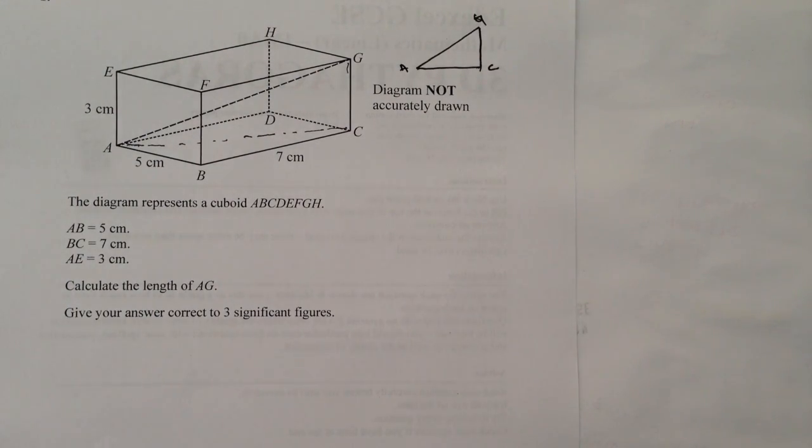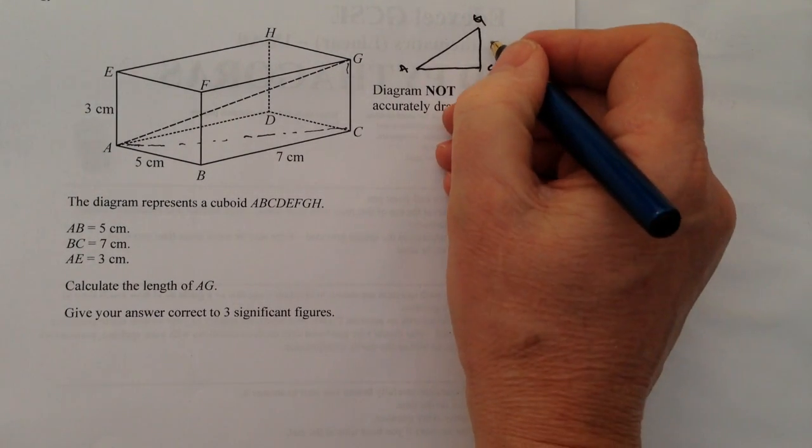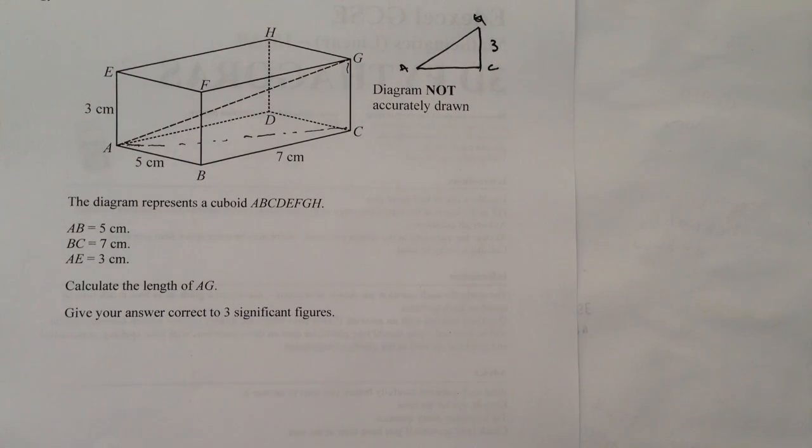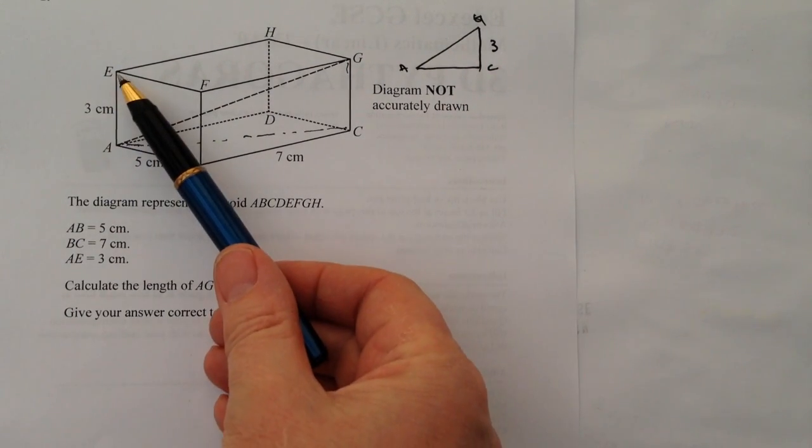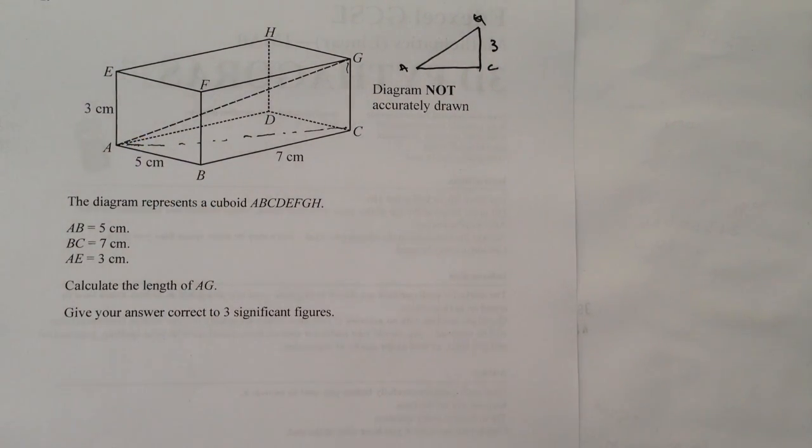Well, I'm okay with C to G because that's three centimeters, that's what it tells me on the actual drawing itself, so I know the height is three centimeters and that's fine.